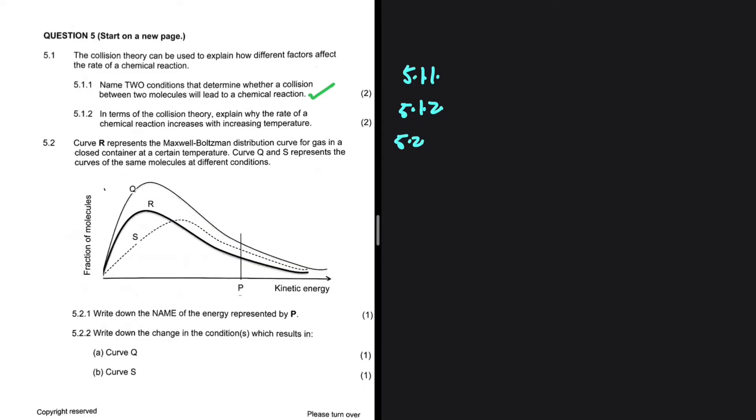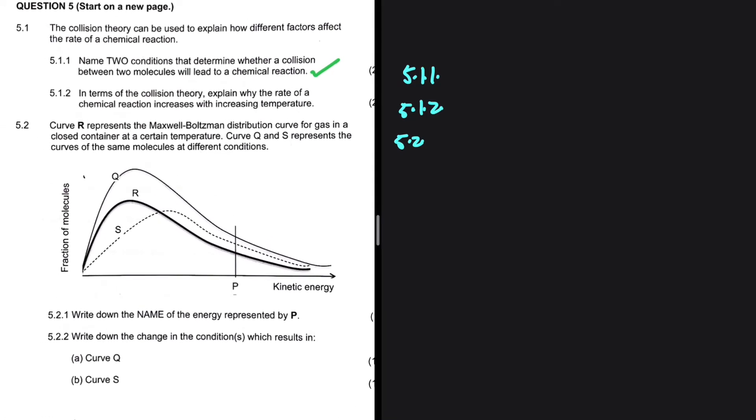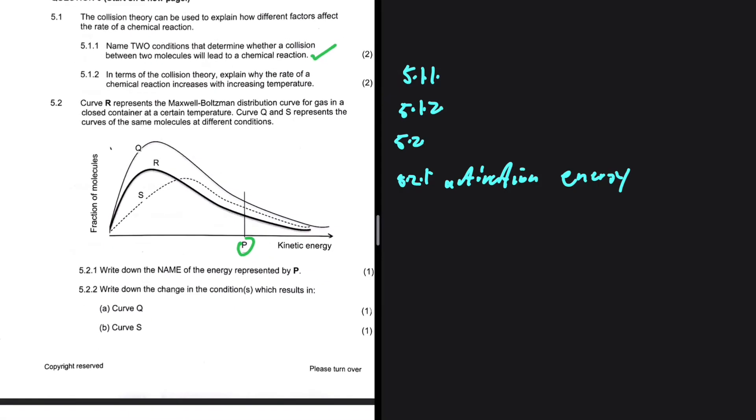Let's look at 5.2. Curve R represents the Maxwell-Boltzmann distribution curve for a gas in a closed container at a certain temperature. Curve Q and S represents the curves of the same molecules at different conditions. 5.2.1, write down the name of the energy represented by P. If you look at P, you should know that is where we find our activation energy. So P is the activation energy.